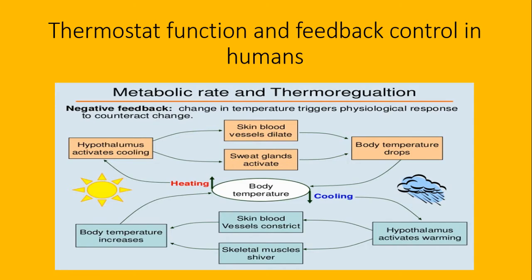جیسے body temperature 37 degree سے اوپر جائے گا تو hypothalamus cooling کے hormones یا enzymes release کرے گا جو skin میں جائیں گے اور blood vessels کو dilate کر دیں گے اور sweat glands کو activate کر دیں گے۔ جیسے blood vessels dilate ہوگی تو heat زیادہ dissipate کرے گی باہر۔ اگر cooling ہوگی تو پھر heating کی conditions generate کرے گا - skeletal muscles shiver کریں گے اور skin blood vessels constrict کریں گی، جس سے body temperature increase ہو کے دوبارہ maintain ہو جائے گا۔